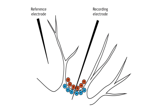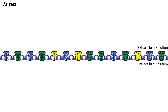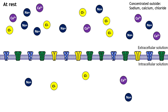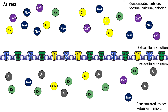At rest, ions are not equally distributed across the membrane. This distribution of ions and other charged molecules leads to the inside of the cell having a more negative charge compared to the outside of the cell. A closer look shows that sodium, calcium, and chloride are concentrated outside of the cell membrane in the extracellular solution, whereas potassium and negatively charged molecules like amino acids and proteins are concentrated inside in the intracellular solution. This ion distribution leads to a negative resting membrane potential.